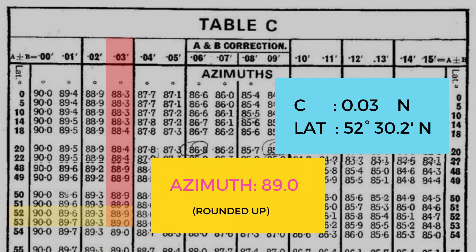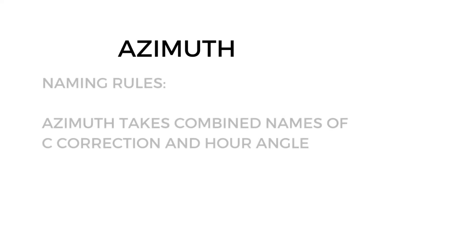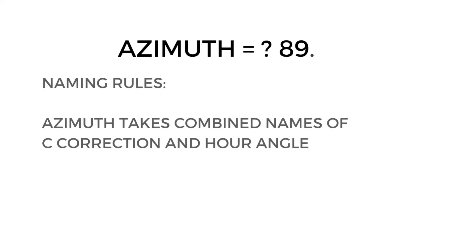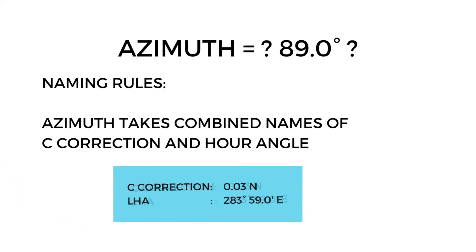By rounding off and interpolation, we get our azimuth of 89.0 degrees. But this is a quadrantal bearing, meaning it will have two directions to specify its quadrant. For that, we have another naming rule: the azimuth takes the combined names of the C correction and our angle.